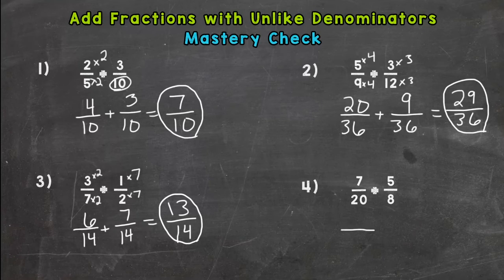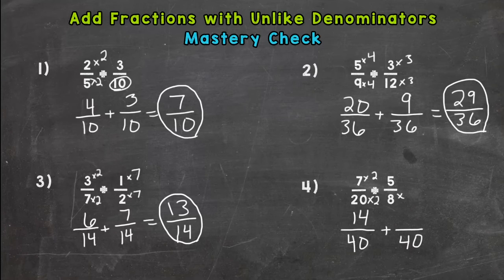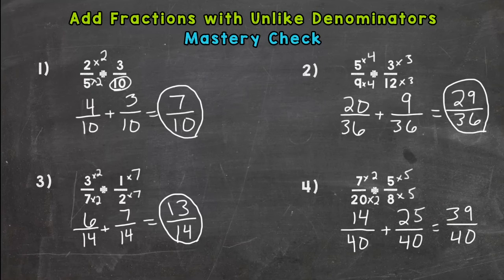Lastly, number four here, common denominator for a 20 and an eight is 40. 20 times two is 40. Seven times two is 14. Eight times five is 40. Five times five, 25. So for this one, 39 fortieths. This one cannot be simplified either, so we are done. 39 over 40.